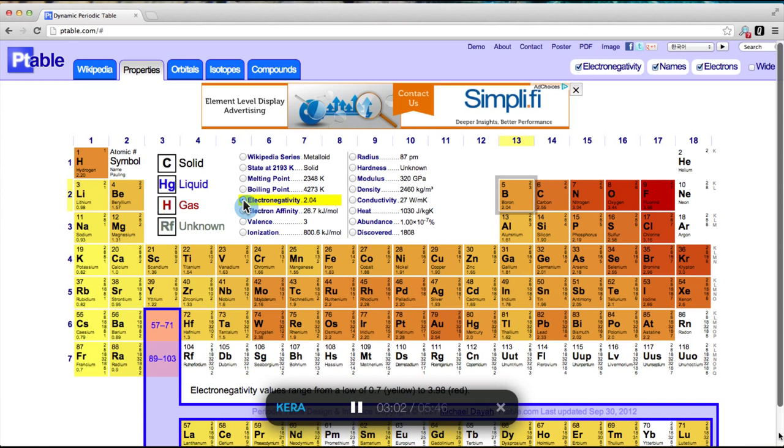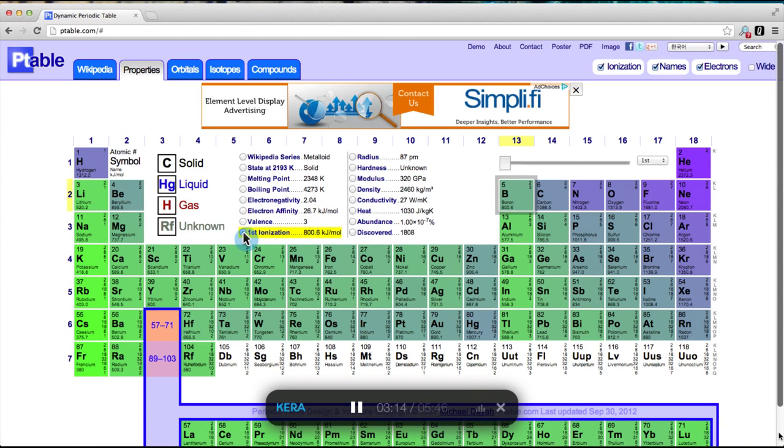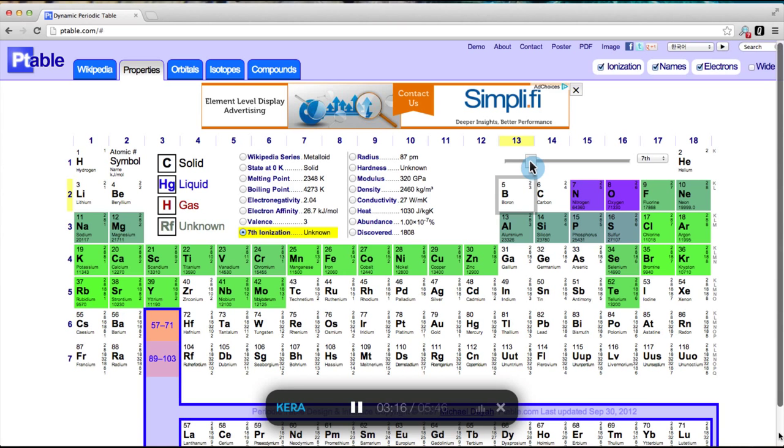Electronegativity has no subset, so the slider area disappears. Elements are colored in proportion to their electronegativity, with yellow being very low values and orange being higher values. Electron affinity and valence work the same way. Ionization energy is similar, but also has a slider showing the values for the first 30 ionization levels for all elements.